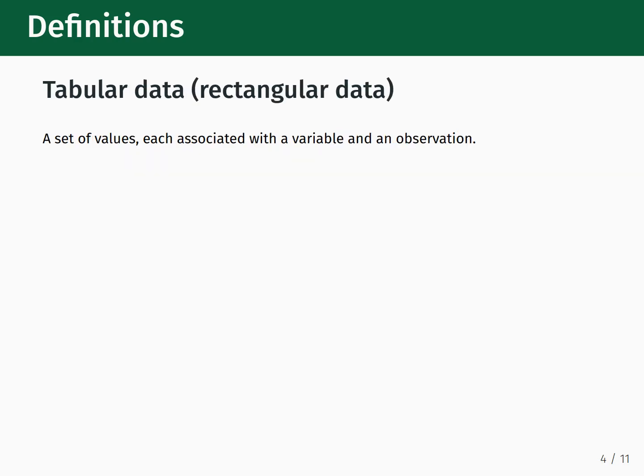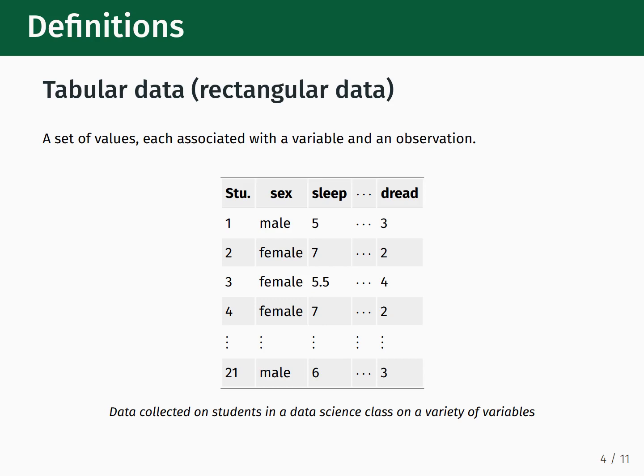Next up, we have tabular data, or rectangular data, which is the primary way that we're going to encounter data within this course. Tabular data is a set of values, each associated with a variable and an observation. An example of tabular data is given below — data collected on students in a data science class on a variety of variables: whether they are male or female, how many hours a night on average they get sleep, and their ranking of dread for taking the course. You will get quite familiar with this format as the semester goes on.